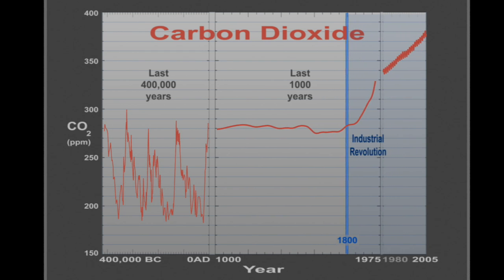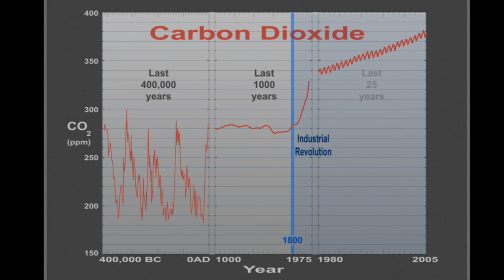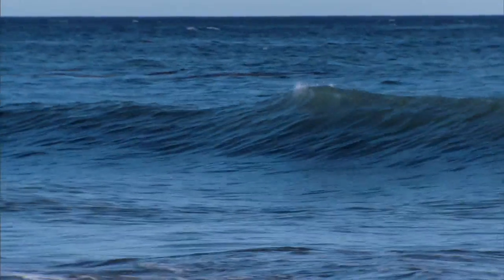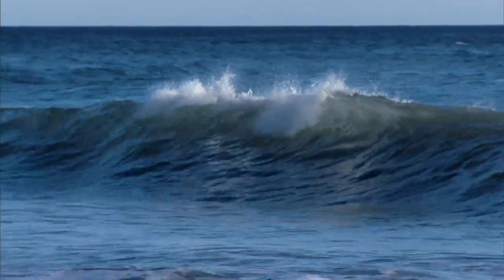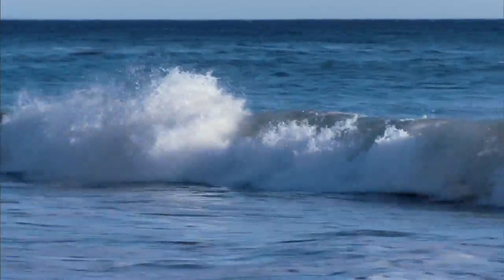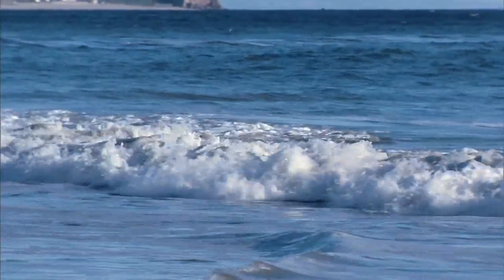Researchers are learning that future climate change will depend on carbon levels in the land, in the atmosphere, and in the sea, and how these levels respond to human disturbance. About one-third of all human-generated carbon emissions has dissolved in the ocean, and more than 80% of Earth's added heat is now stored in the ocean.